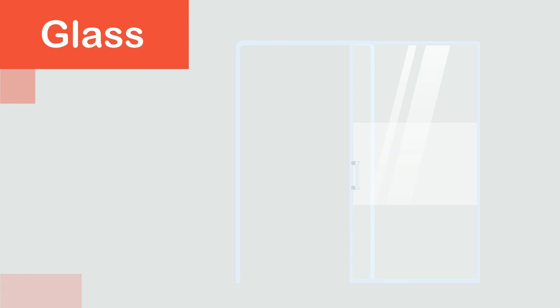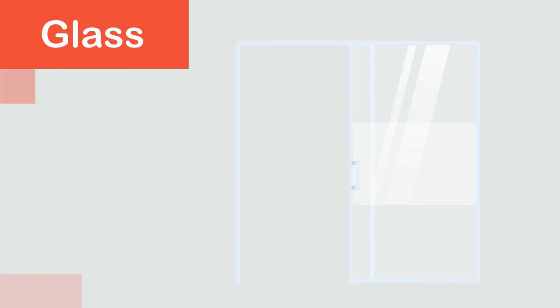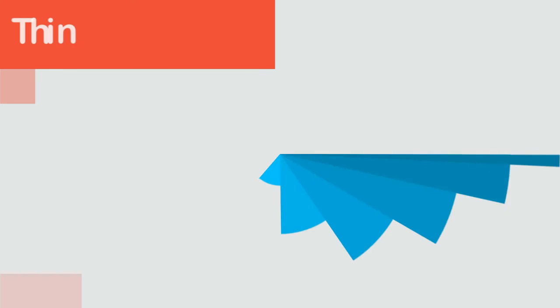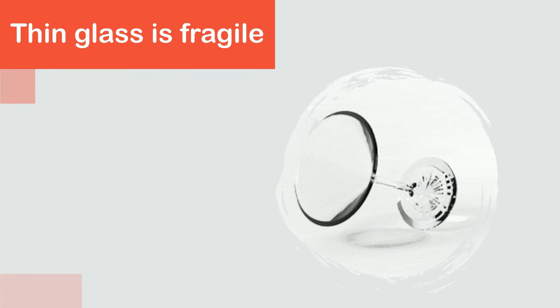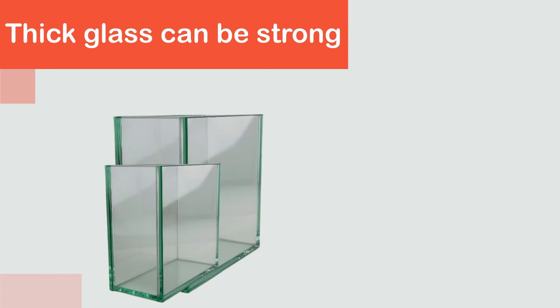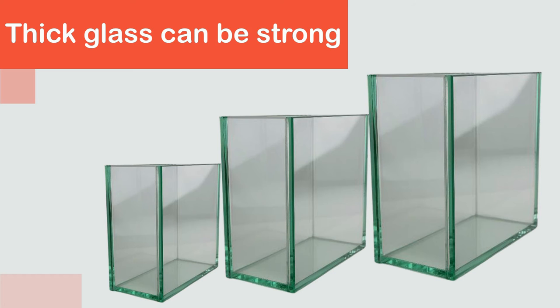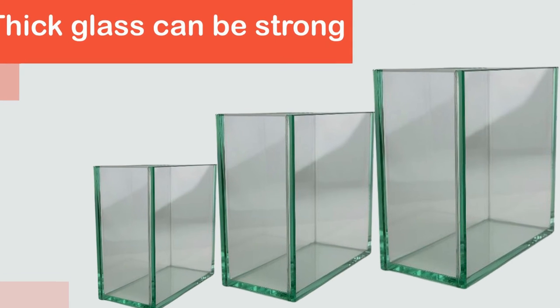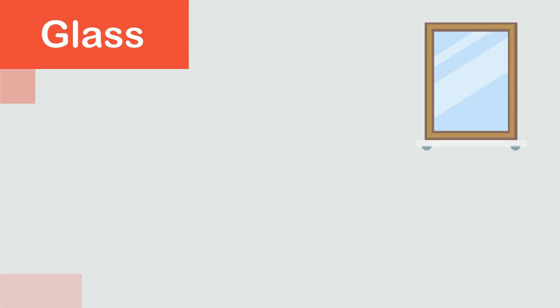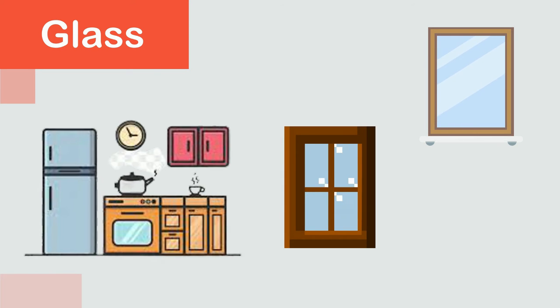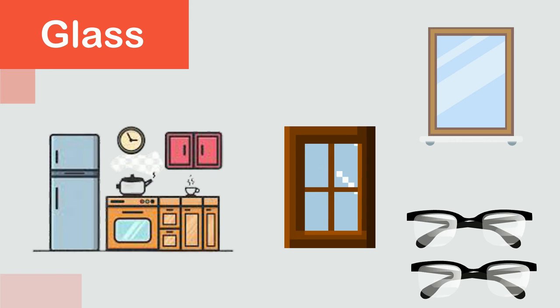Glass: glass is made from silica, which is a type of sand. Silica is melted at high temperature to make glass. It is mostly transparent, which means we can see through it. Thin glass is fragile and can be broken easily, but thick glass can be strong. Similar to metal and plastic, it can be molded into any shape when melted. Commonly it is used in mirrors, windows, kitchen utensils, and spectacles.